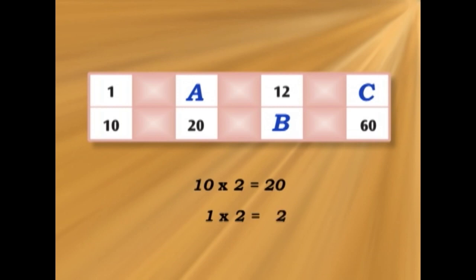So 1 over 10 is the same as 2 over 20. Now we have 12 over B. We know A is 2.